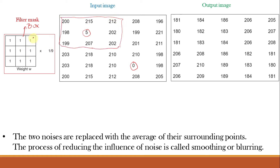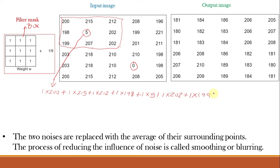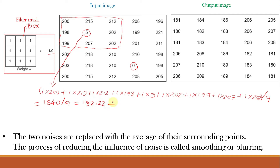Placing the filter mask over a section containing the noise pixel with value 5, we compute: (1×200 + 1×215 + 1×212 + 1×198 + 1×5 + 1×202 + 1×199 + 1×207 + 1×202) / 9 = 1640 / 9 ≈ 182.22, rounded to 182. So in the output image, the noise pixel with value 5 is converted to 182. Similarly, the other noise pixel with value 0 becomes 183. This is how convolution-based averaging filtering works.